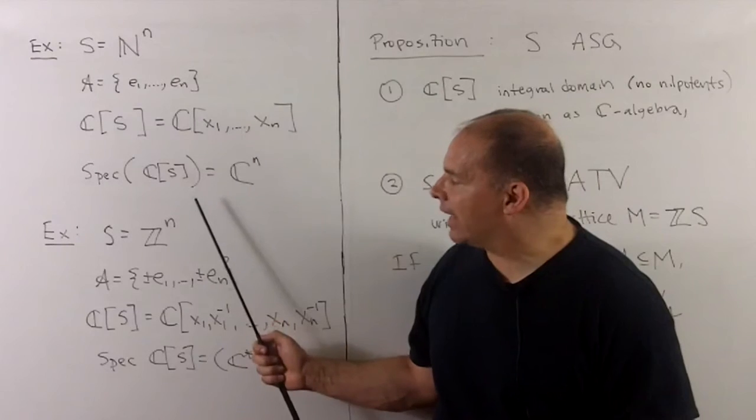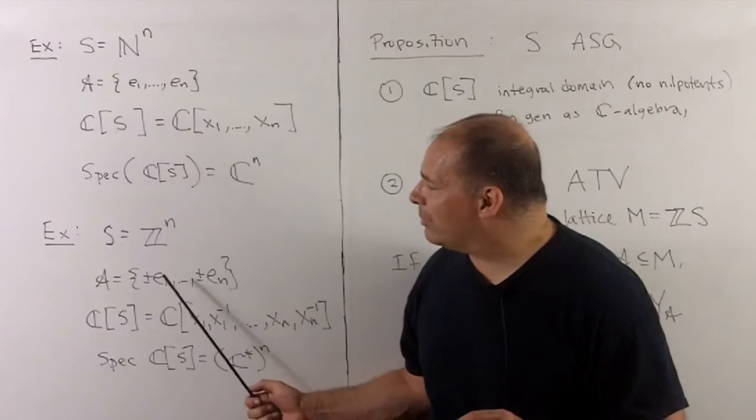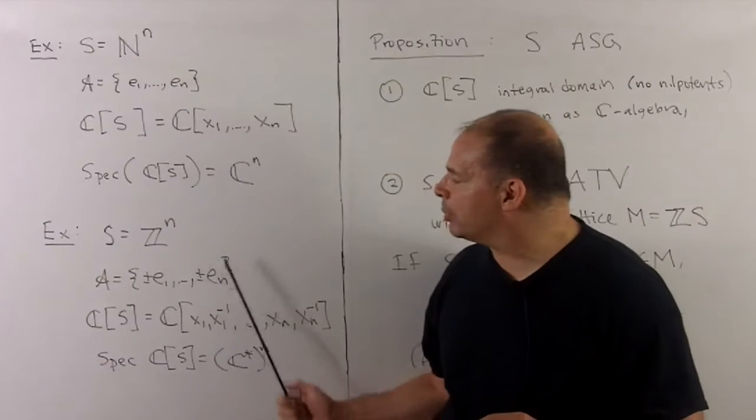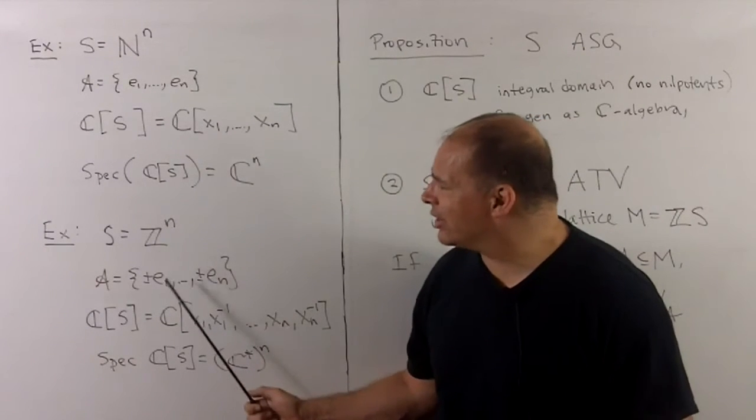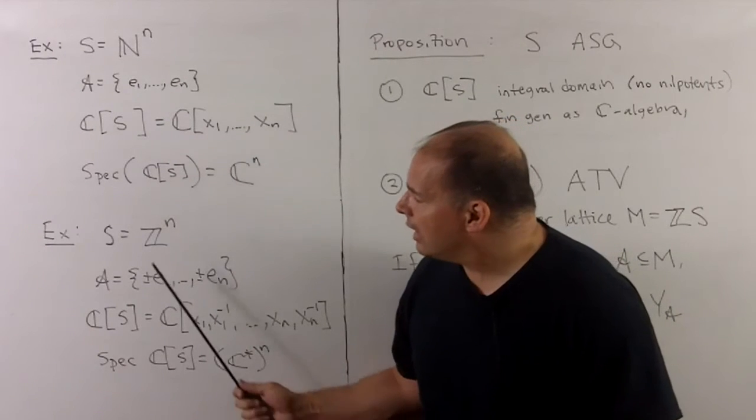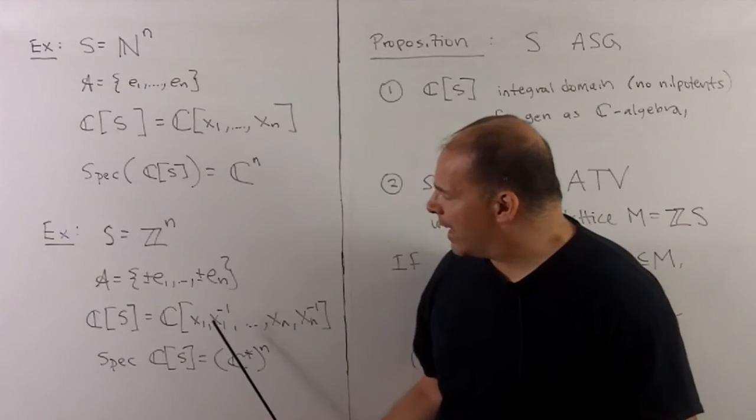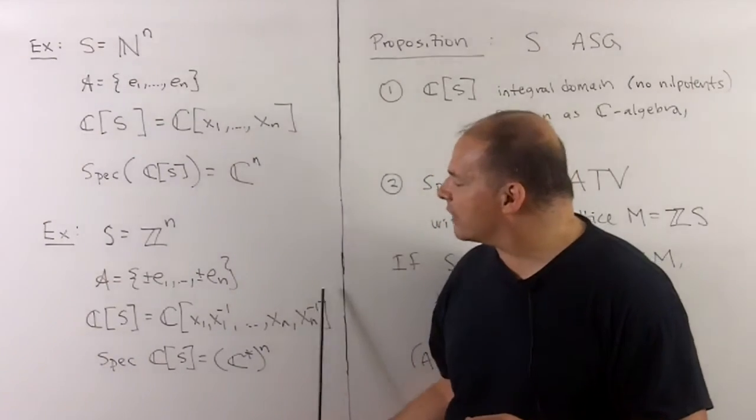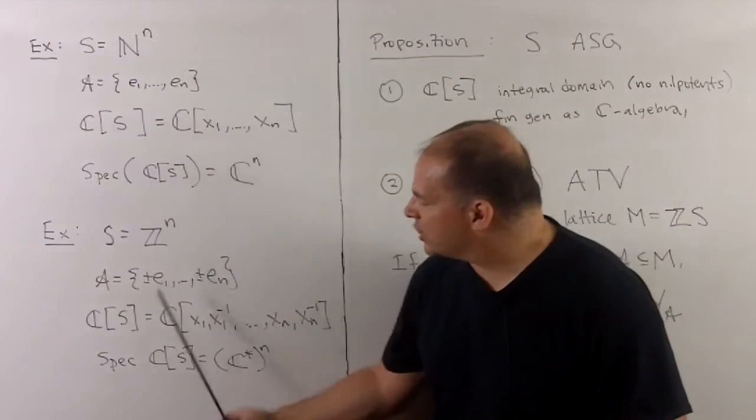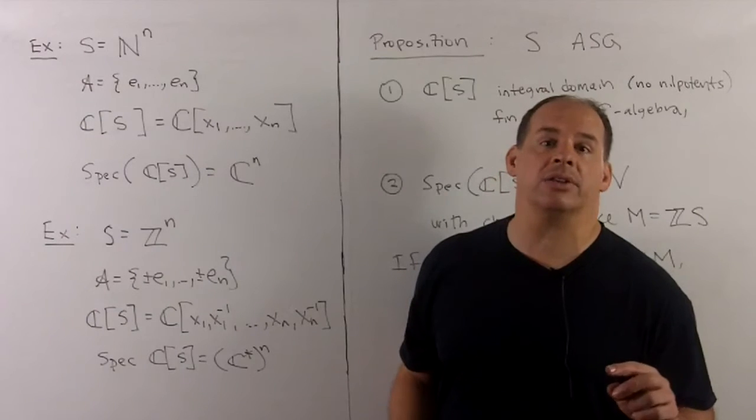Next, if we have S equal to Z to the N, now as an affine semigroup, this is going to be generated by plus minus E1 up through plus minus En. So we're not doing subtraction in here, so we have to put in the minuses. Now, we take the algebra generated, then we're going to have X1, X1 inverse, all the way up through XN, XN inverse. And if we take Spec of this, well, this is the coordinate ring for C star to the N, so a torus.